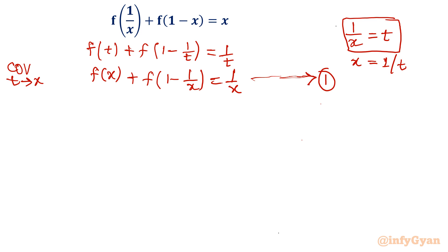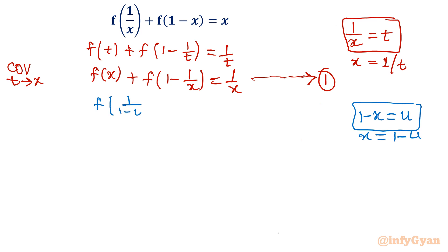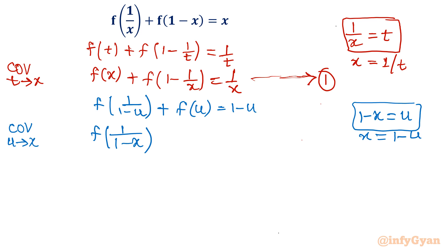Now we give a second substitution. We substitute 1 - x = u, so x = 1 - u. After this substitution, the equation becomes f(1/(1 - u)) + f(u) = 1 - u. Changing variable u back to x, Equation 2 is: f(1/(1 - x)) + f(x) = 1 - x.